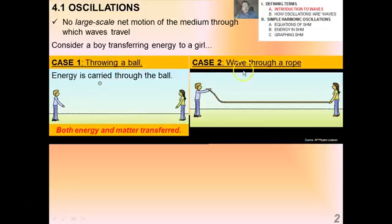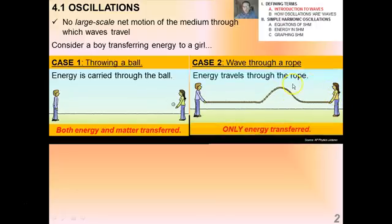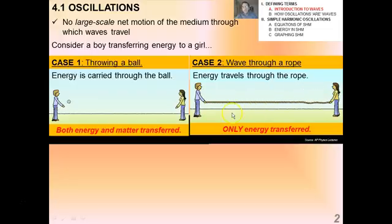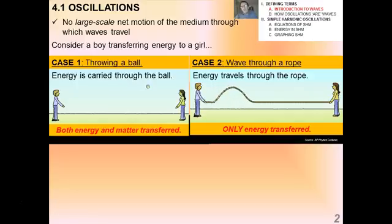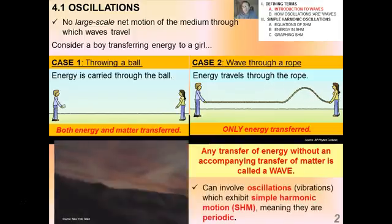This is very different from a wave. If you consider a taut string between the boy and the girl, and the boy sends a wave pulse down towards the girl, again energy travels from boy to girl. But only energy is transferred — the actual matter of the rope is not transferred. The rope does move, perpendicular to the velocity of the wave pulse, but the girl doesn't receive the whole rope. We can define a wave as any transfer of energy without an accompanying transfer of matter.